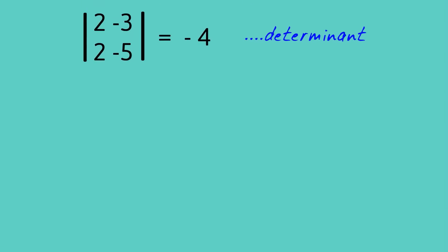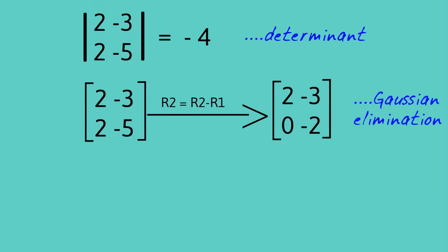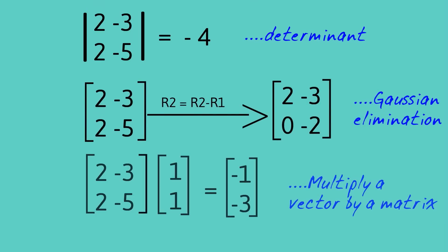To understand it there's a few things that you need to know: the determinant of a matrix, you should be familiar with Gaussian elimination, and finally you need to know how to multiply a vector by a matrix like I've got here.